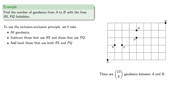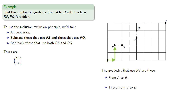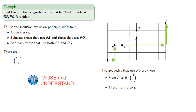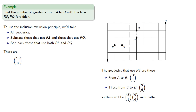There are 13 choose eight geodesics between A and B. The geodesics that use RS are those from A to R and from S to B. To go from A to R, there's a total of three steps, one of which has to be horizontal, so there are three choose one geodesics. To go from S to B, there's a total of nine steps, six of which have to be horizontal, so there are nine choose six geodesics — and we'll subtract that amount.